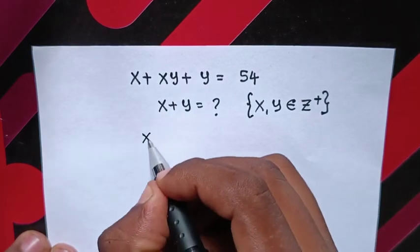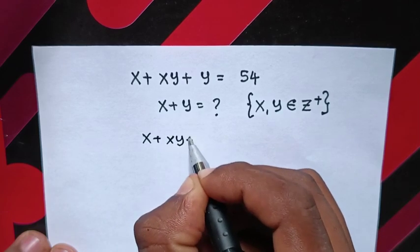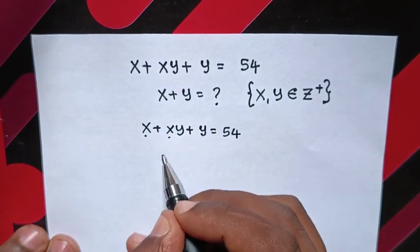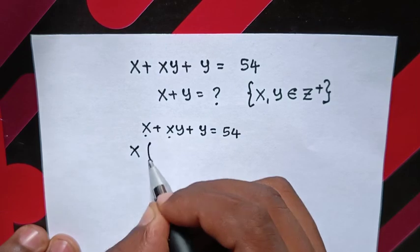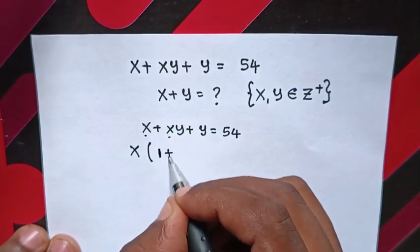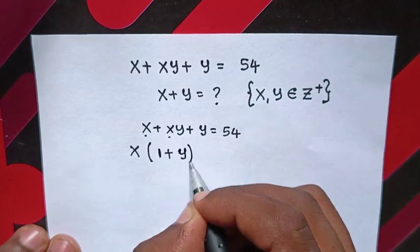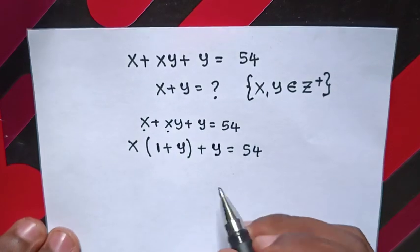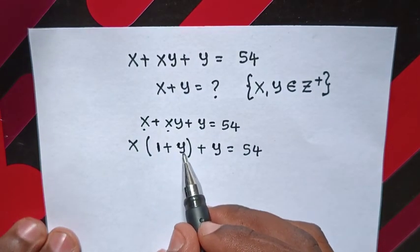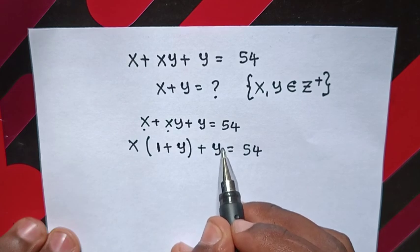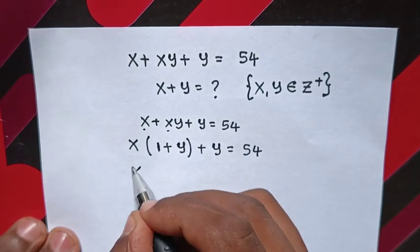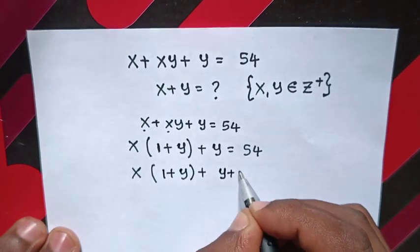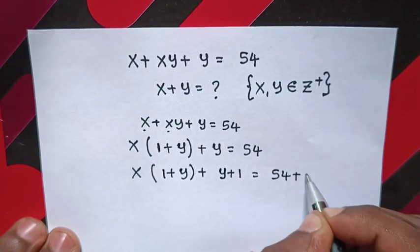From here, x plus xy plus y equals 54. We can see that x is common, so we factor x out of the bracket: x times (1 plus y) plus y equals 54. Now, you can see inside the bracket we have (1 plus y) and here we have y, so we add 1 to both sides: x(1 plus y) plus y plus 1 equals 55.